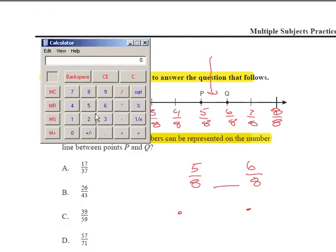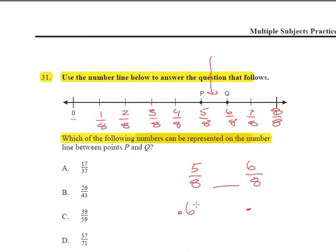All right, I should have already memorized this but let's do it the hard way first. Let's get the decimal equivalent for 5 eighths. That's easy. That's going to be 5 divided by 8. That's going to give us 0.625. So I'll go ahead and write that in here. 0.625.